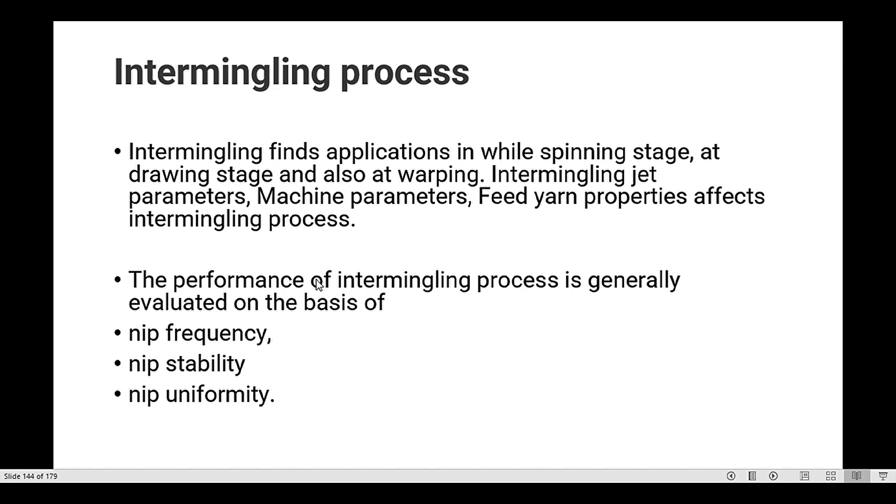The performance of the intermingling process is generally evaluated on the basis of the following parameters: nip frequency, nip stability, and nip uniformity. These are the variables where the intermingling process is dependent.